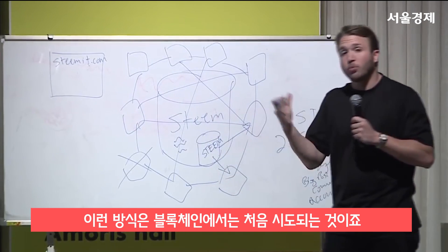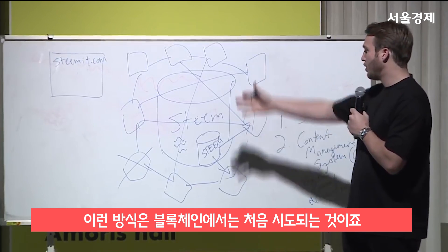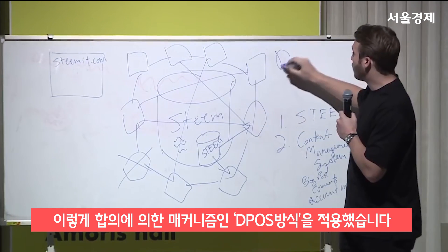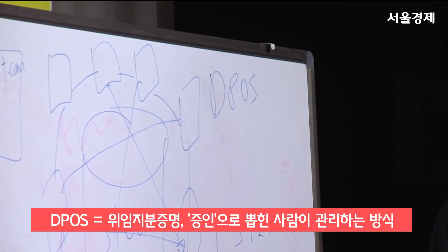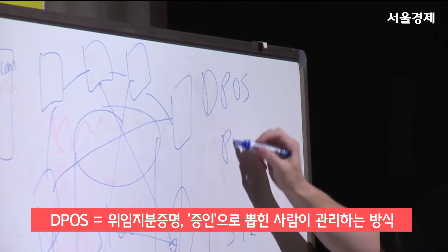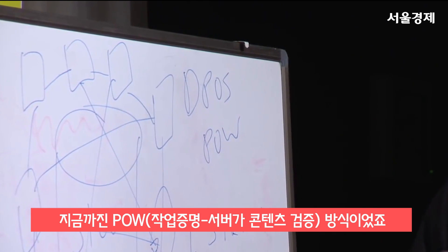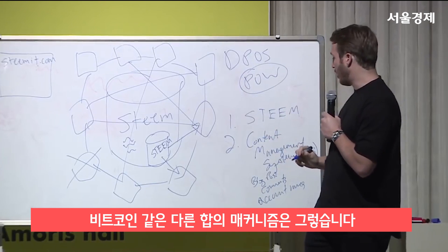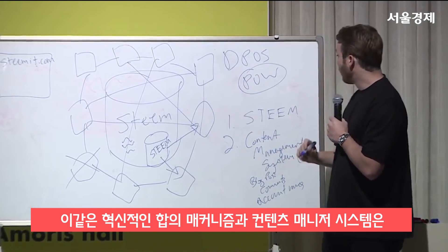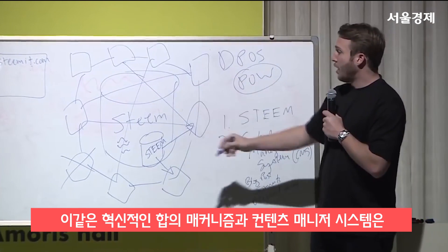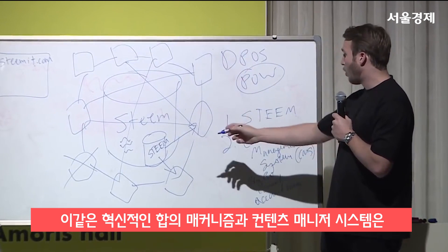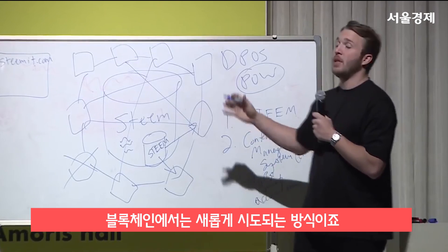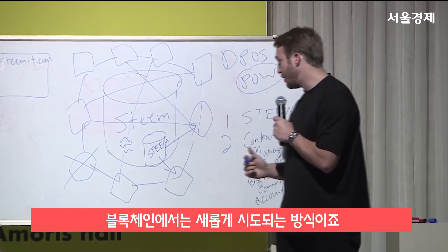This is the first time, with blockchain, that cryptocurrency has been made possible in this way. This particular consensus algorithm is referred to as DPoS — Delegated Proof of Stake — as opposed to other consensus mechanisms like Bitcoin's, which is proof of work. So you can see there's an innovative consensus mechanism, there's a currency, and there's also a content management system. That's new to blockchain — that had never happened before Steem.